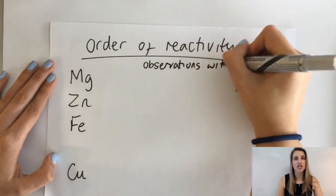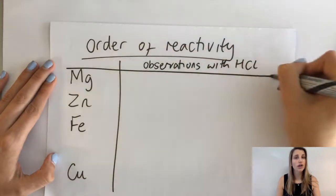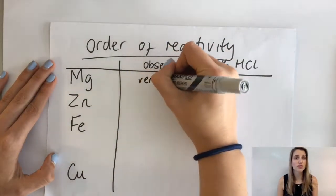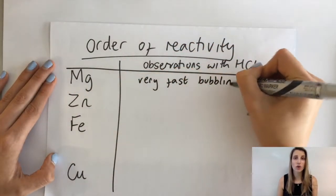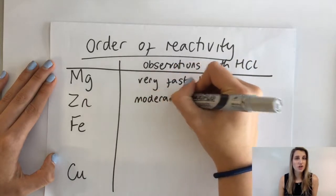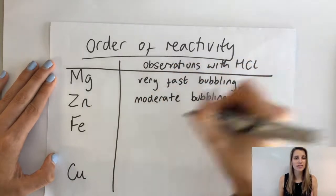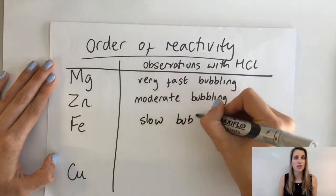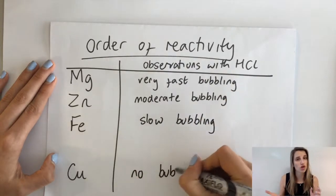If we write down our observations with HCl, it's really important that we use descriptive words so that we can tell which one bubbled more. If I just wrote bubbles in all of them, that doesn't really tell me any information about which ones are going fast or slow.